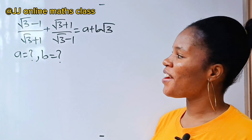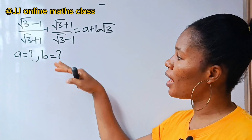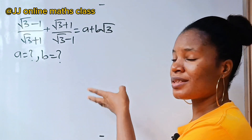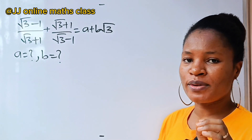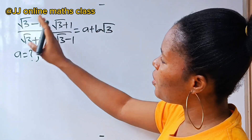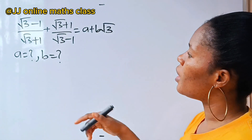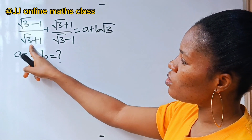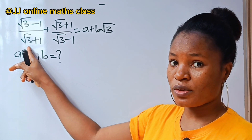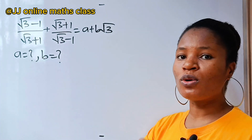Today we are going to solve for the values of a and b in this equation. I'll take this step by step, so pay close attention. The first thing we need to do anytime we see a surd as a denominator is to rationalize the denominator. We rationalize the denominator using the conjugate of the denominator.